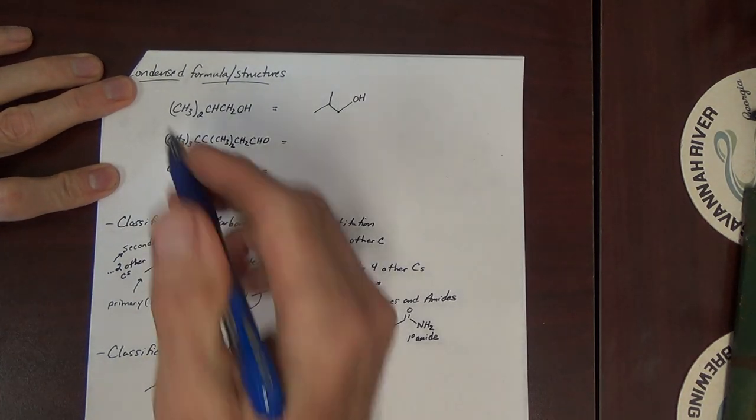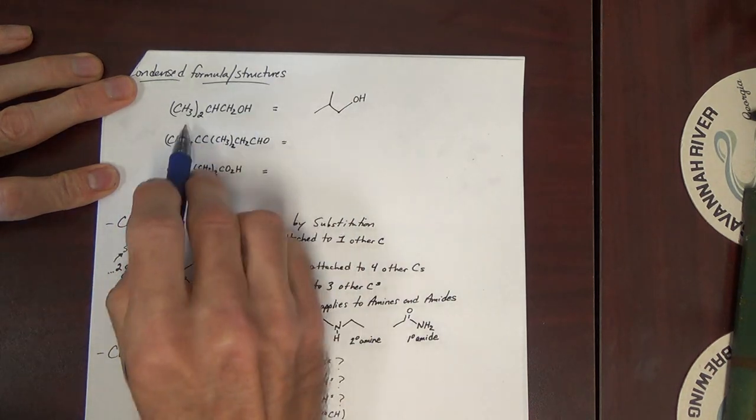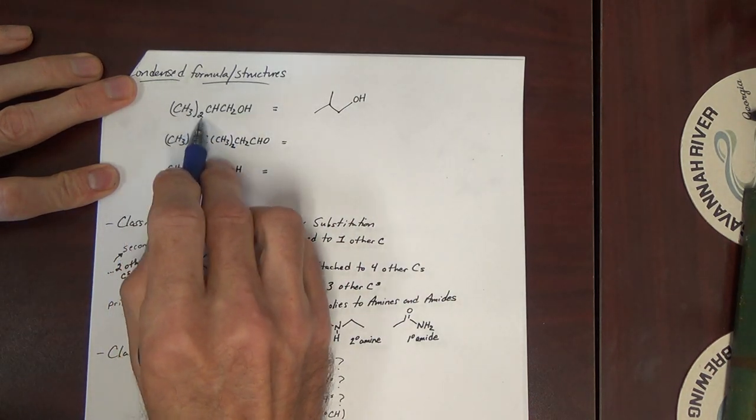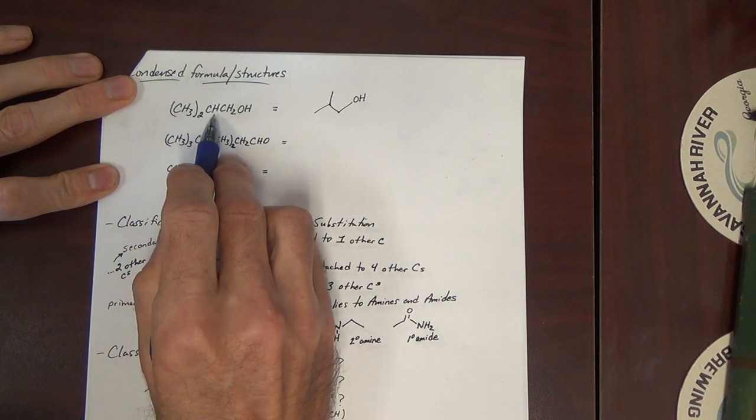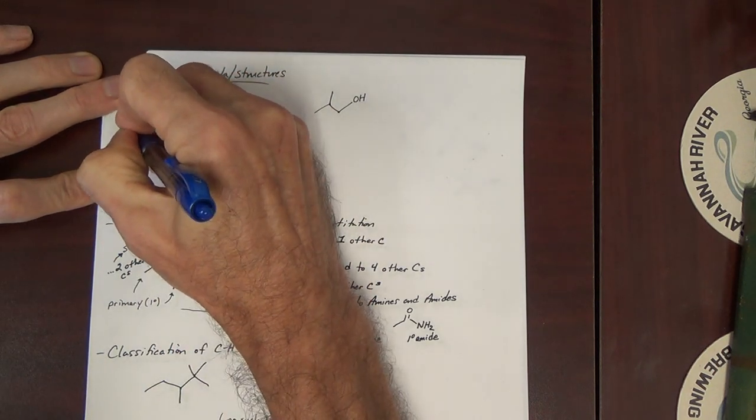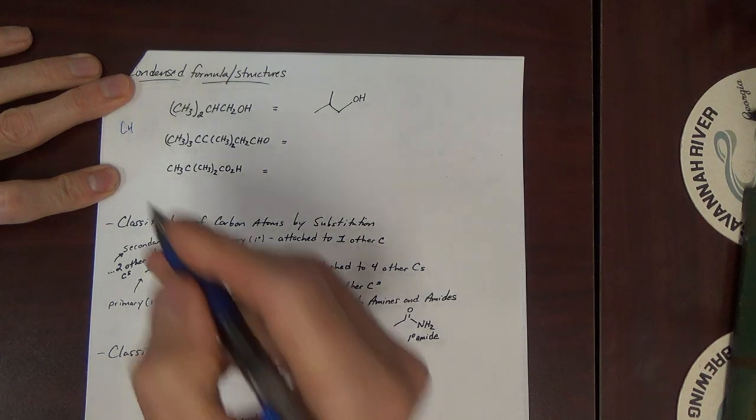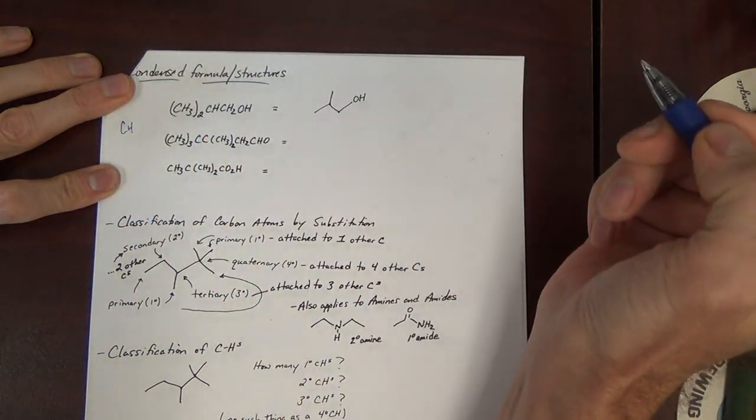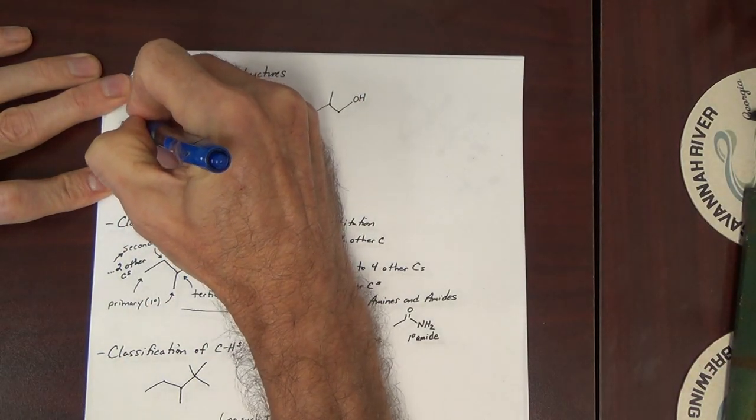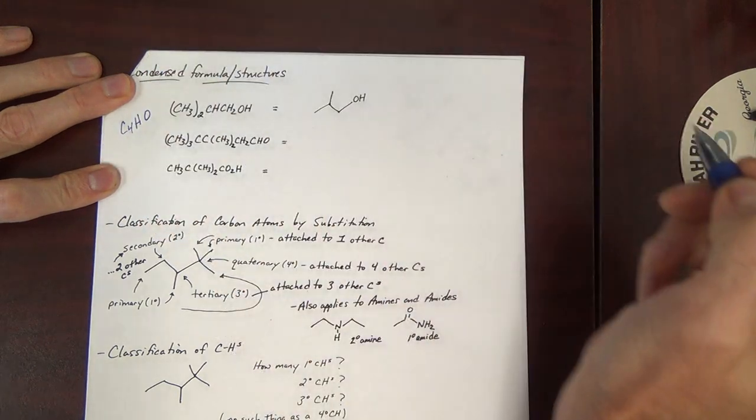Now first off, if we back this up to pure formula, how many carbons would there be here? Two methyl groups, that's two carbons, three, four. That would be C4. There's one oxygen there, well there's some H's, and then there's an oxygen. One oxygen. How many H's?